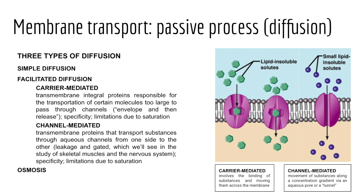Another passive process is facilitated diffusion. For solutes too polar or highly charged, they may cross the plasma membrane but need help or facilitation. In this manner, a solute binds to a specific protein transporter embedded within the plasma membrane and is released on the other side. This is a passive process — no energy is required. There are two types: carrier-mediated facilitated diffusion, involving the binding of a substance to a transporter which delivers it to the other side, and channel-mediated diffusion, where proteins act merely as tunnels to transport substances from one side to the other.